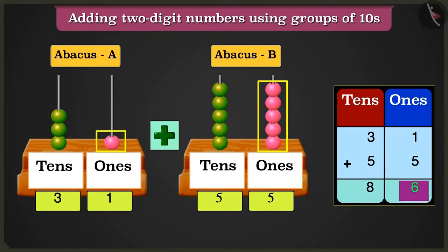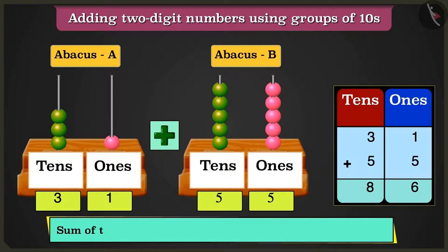So here we have 8 tens and 6 ones. So abacus A and abacus B added together will give us the number 86.